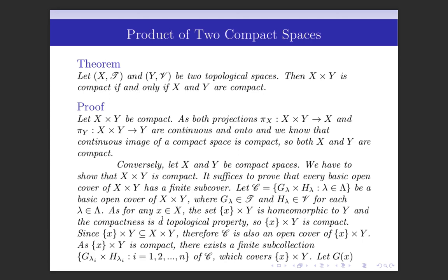For any x in X, the set {x} cross Y is homeomorphic to Y. We also know that compactness is a topological property, meaning the homeomorphic image of a compact space is compact. Since Y is compact and {x} cross Y is homeomorphic to Y, being a homeomorphic image of a compact space, {x} cross Y is also compact.